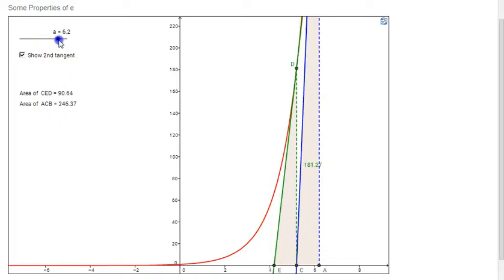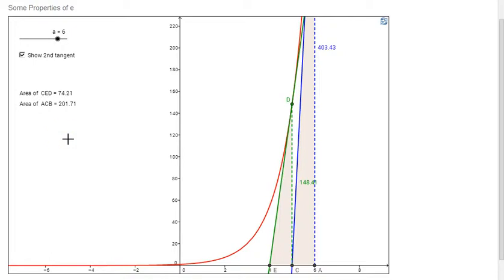Let's make A be equal to 6. So I have 74.21 and 201.71. Okay, so I hope you are seeing a pattern here, the ratio of the two areas. Yes, yes, is equal to e actually.